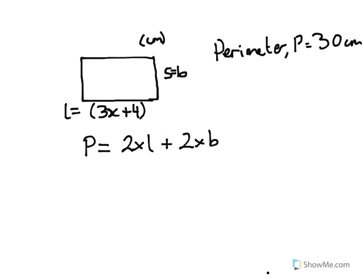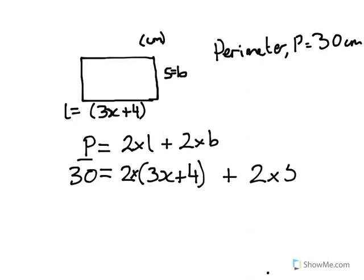So now we put in our perimeter, we know it's 30, equals 2 times the length, 2 multiplied by 3x plus 4, plus 2 times the breadth, which we know is 5.